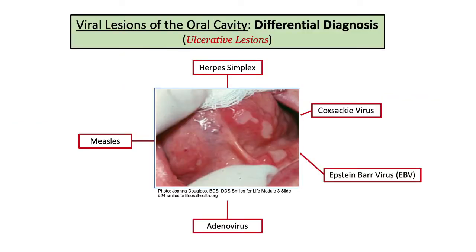Ulcerative lesions in the mouth can occur as a result of viral infections, but not all ulcerative lesions are viral and they each have unique features. In this section we are going to touch on the high-yield viral infections that can cause lesions in the oral cavity. During this presentation I'll highlight the distinguishing traits and key clinical manifestations. The five viruses we'll be focusing on include measles, herpes simplex, Coxsackie, EBV, and adenovirus.